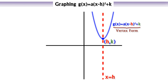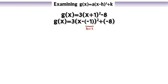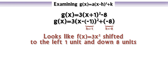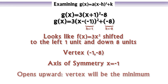We call it vertex form because we can easily identify the location of the vertex of the parabola without graphing. Examining g(x) = 3(x + 1)² - 8 without graphing, we see that it's in vertex form. Since h equals negative 1 and k equals negative 8, it will look just like f(x) = 3x², but shifted to the left 1 unit and down 8 units. Its vertex must be located at (-1, -8), because the vertex is always at (h, k). Its axis of symmetry will be x = -1. And lastly, since a is positive, the parabola opens upward, so it will obtain its minimum value at the vertex.